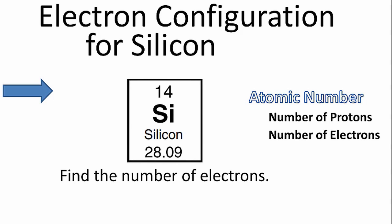To find the electron configuration for silicon, we first need to find the number of electrons for the element. We can do that by looking on the periodic table, finding silicon, and going to the atomic number.